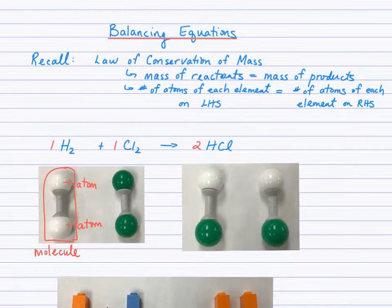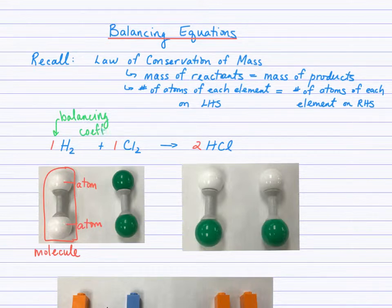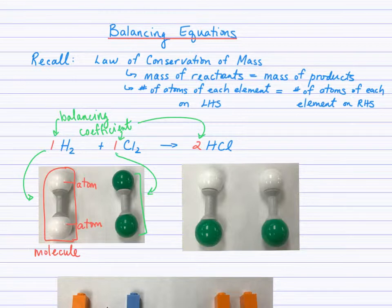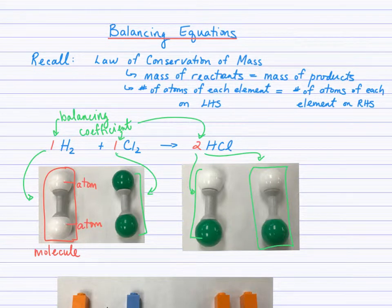What is the significance of the red number written out in front? These numbers are called balancing coefficients, and they indicate the number of molecules. We see here that there is one molecule of H2 and one molecule of Cl2. On the product side, there are two molecules of HCl — one here and a second one here. Notice that the number of hydrogen atoms on the left side equals the number on the right side, and the same with the chlorine. We are maintaining the law of conservation of mass.